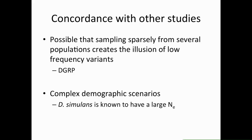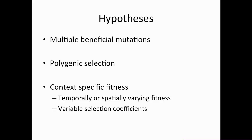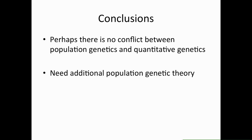However, Drosophila simulans is known to have a very large effective population size. The message is that in large populations, many beneficial mutations may segregate and soft sweeps seem to dominate and maintain variation. Our hypothesis is that this could be due to multiple beneficial mutations for a single trait sorting in the population, polygenic selection, or context-specific fitness — temporally or spatially varying selection, or selection coefficients that change depending on genetic background or time. In conclusion, there may be no conflict between standard mutation-limited population genetics models and quantitative genetics findings of abundant heritable variation, but we need additional theory addressing large populations and high diversity.